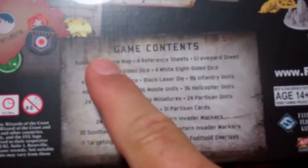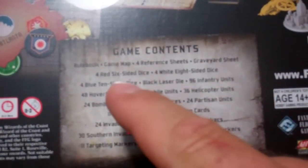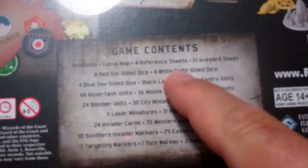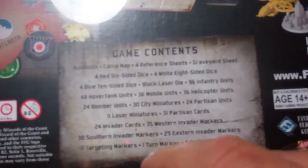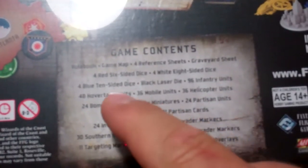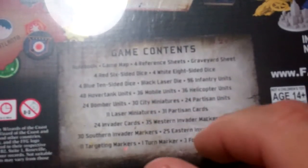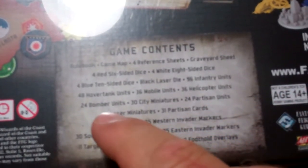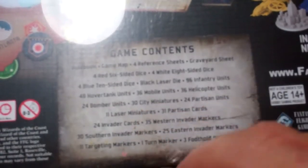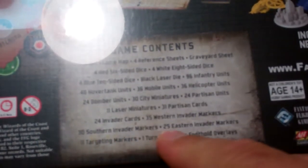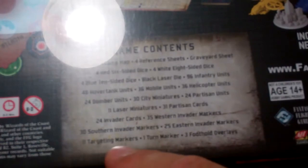You get a rule book, a game map, four reference sheets, a graveyard sheet, four red six sided, four white eight sided, four blue ten sided, black laser dice, 96 infantry, 48 hover tank, 36 mobile units, 36 helicopters, 24 bombers, 30 cities, 24 partisan units, 11 laser miniatures, 31 partisan cards, 24 invader cards, 35 western invader markers, 30 southern invader markers, 25 eastern invader markers, 11 targeting markers, one turn markers, and three foothold overlays.